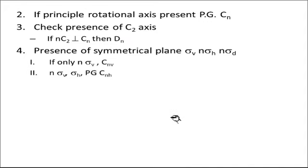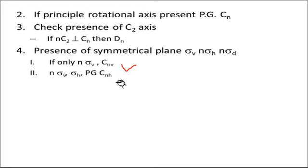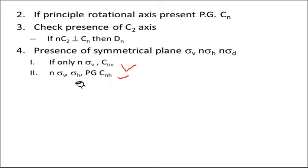Then you have to find out the presence of planes. If only σV is present, then your point group will be CnV. If σV and σH both are present, then your point group will be CnH. If only σV is present it will be CnV, and if σH is present — even though σV is present — then your point group would be CnH.